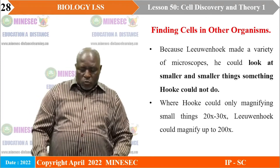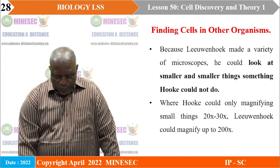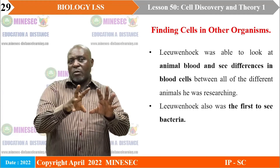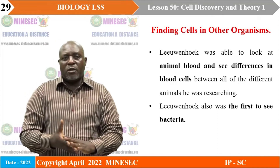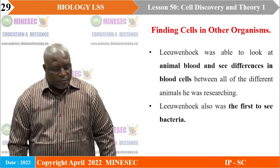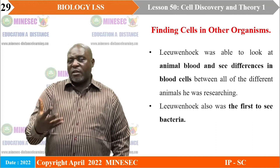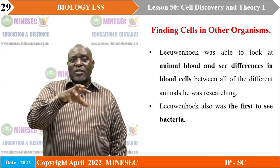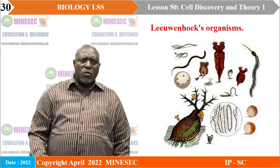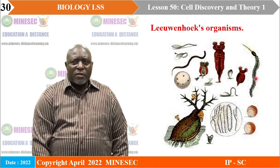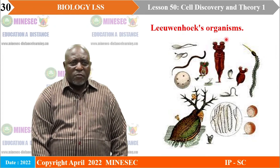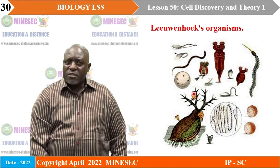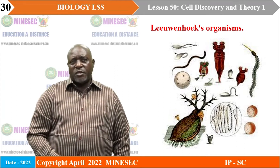Leeuwenhoek's discovery was an advancement on Hooke. He was able to look at animal blood and see differences in the blood cells — he could describe red blood cells as biconcave and white blood cells as amoeboid. He was also the first to see bacteria using his high-magnification microscope. He found that some cells were living organisms. He tried to draw what he saw under the microscope so that other scientists could see the variety of organisms from the pond scum.